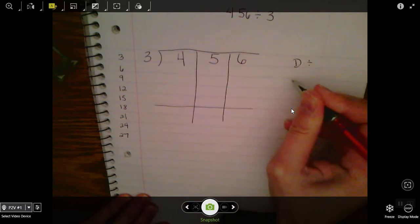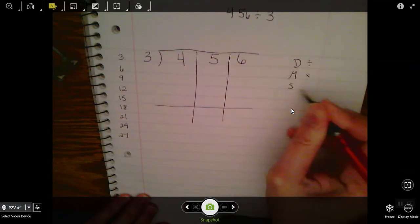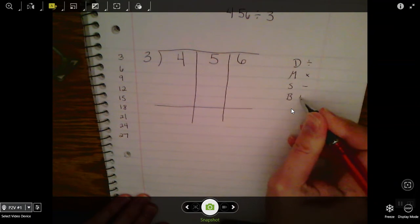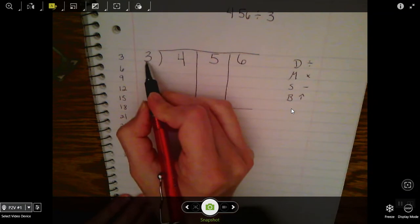My steps are: Does, which is divide; McDonald's, which is multiply; Sell, to subtract; and Burgers, which is bring up.